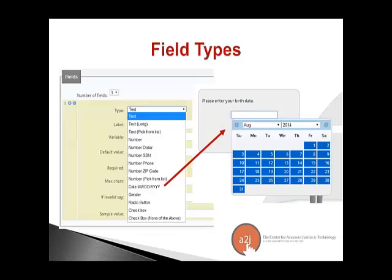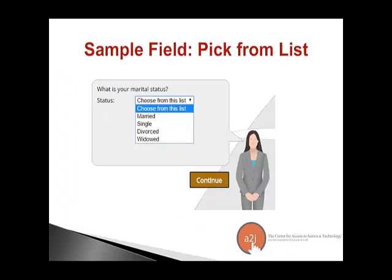There are nine different field types — the format the end user sees or inputs information. These include text, number, date, gender, radio buttons, or check boxes. Numbers can be formatted differently if the number is a zip code, social security number, or dollar amount. You can also have text long, text picked from a list, or plain small text. For example, a date field will include a calendar for the end user to select from, and a text-picked-from-a-list field lets the end user choose the option appropriate for them, which could also be asked as a radio button or check box.